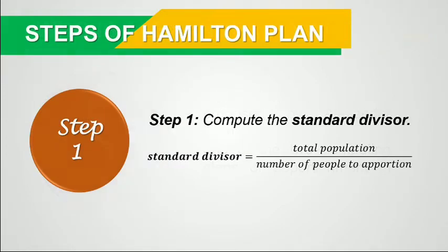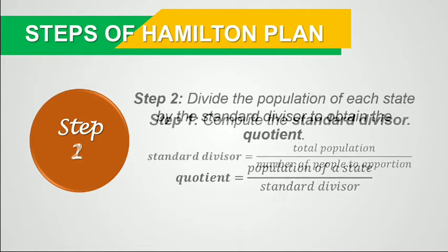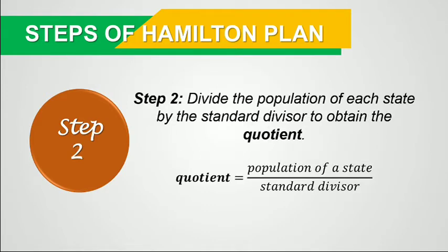The first step is to compute the standard divisor using this formula: standard divisor equals the total population divided by the number of people to apportion. The second step is to divide the population of each state by the standard divisor to obtain the quotient, where quotient equals population of a state divided by the standard divisor.